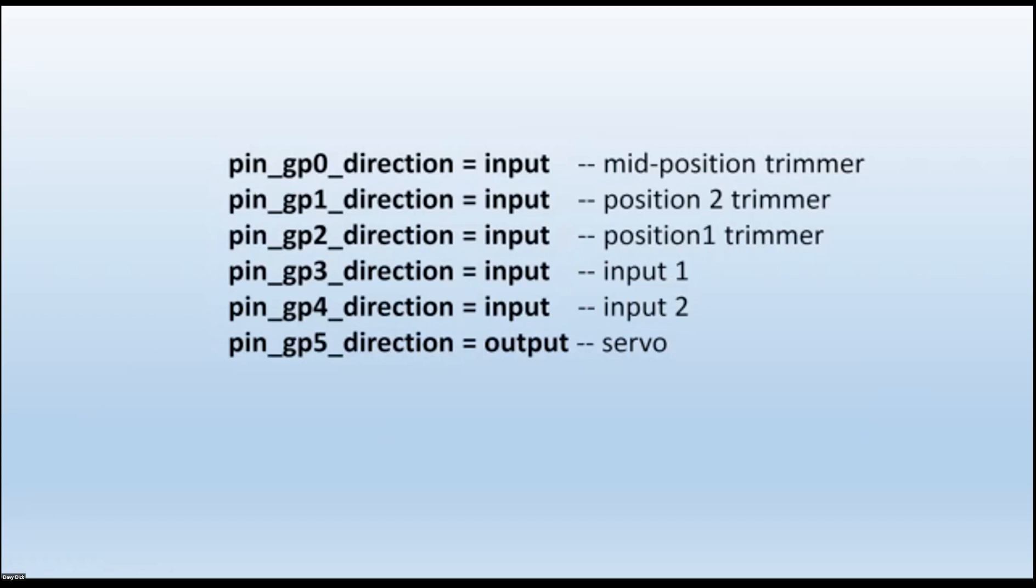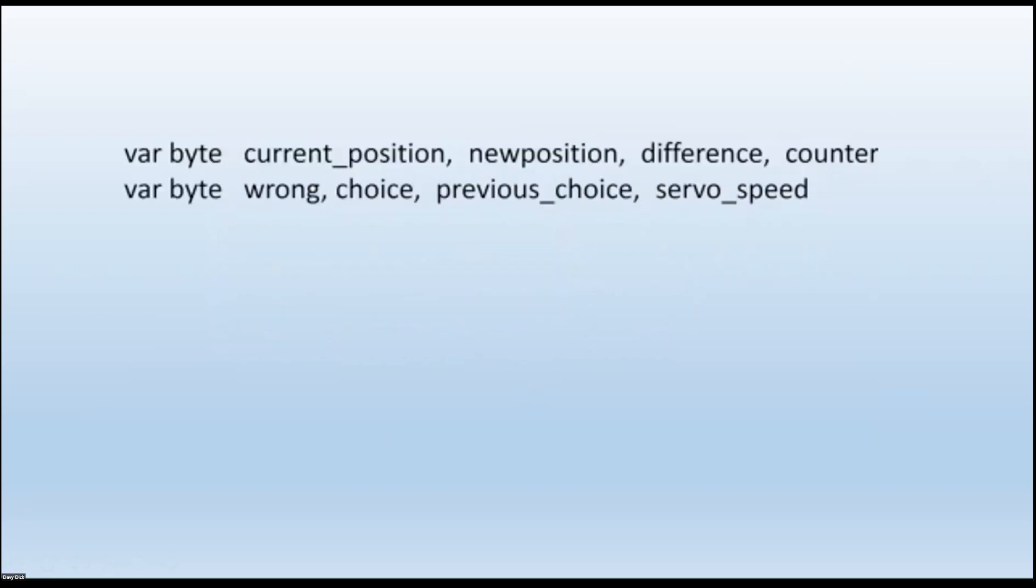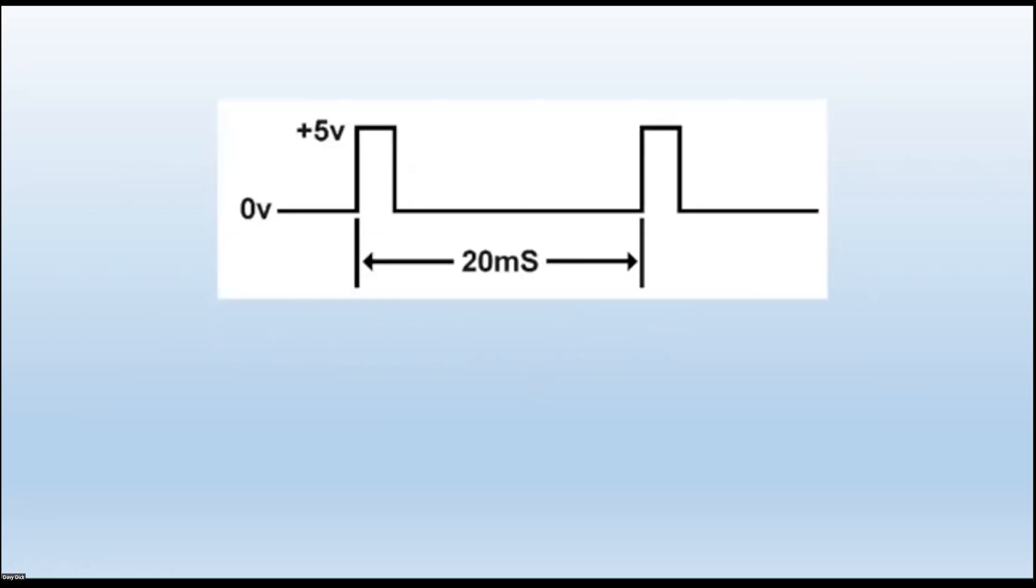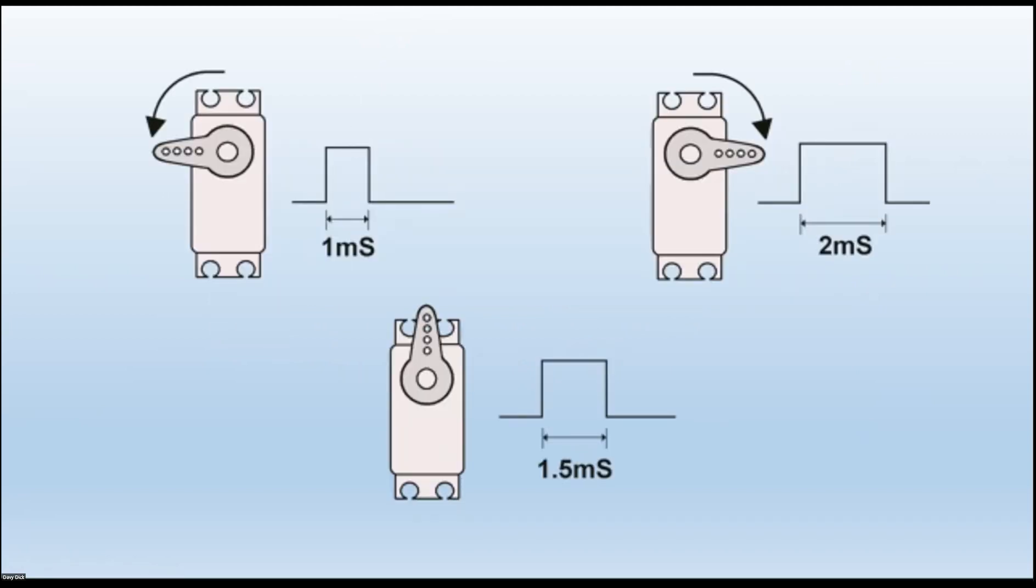Again, usual stuff in programming, we decide that the trimmers all have to be inputs as have the two switch positions and one output going to the servo. Nothing different there. We set ourselves various variables to use during the program. We know that the way the servo works is you have a pulse that repeats every 20 milliseconds, and that pulse width determines the rotation. Anything between traditionally one millisecond to two milliseconds. The amount of rotation depends on the pulse width that you send. That's traditional servo stuff.